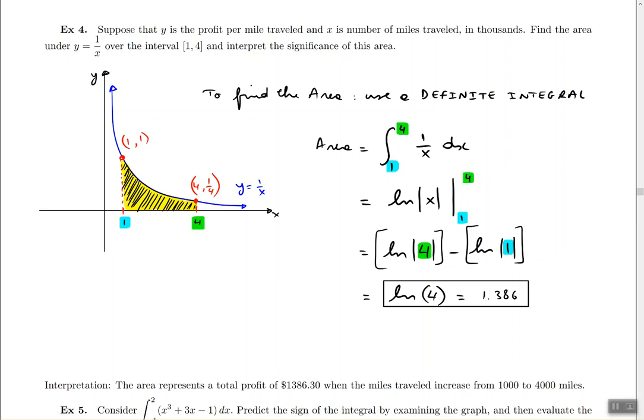How do we interpret the significance of this area? What does the area mean in this problem? The interpretation is that the area represents a total profit of $1,386 roughly when the miles traveled increases from 1,000 to 4,000.